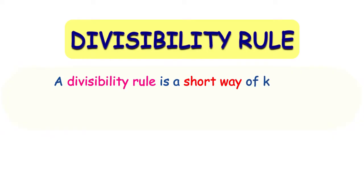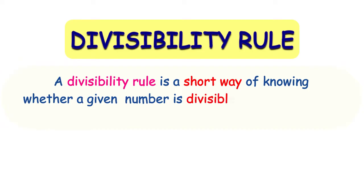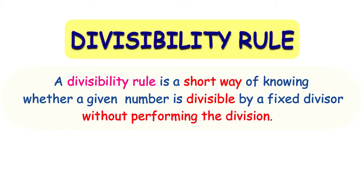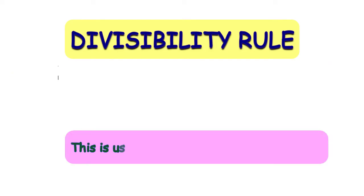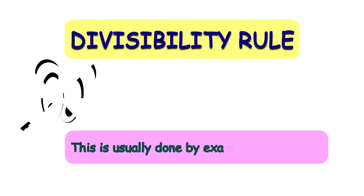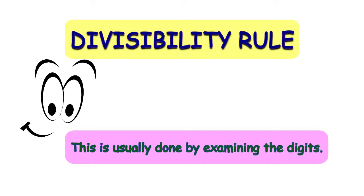What is a divisibility rule? A divisibility rule is a short way of knowing whether a given number is divisible by a fixed divisor without performing the division. This is usually done by examining the digits. Let's learn about them.